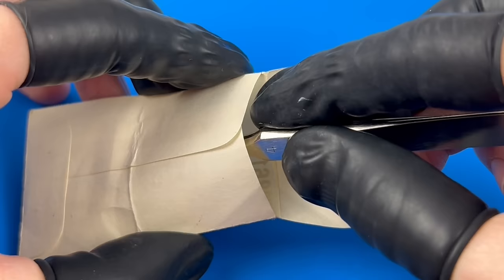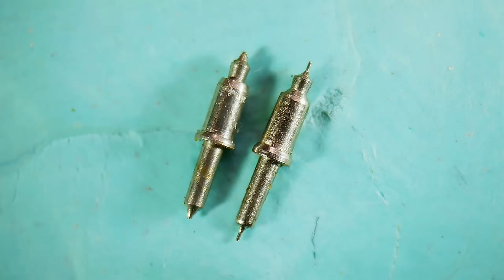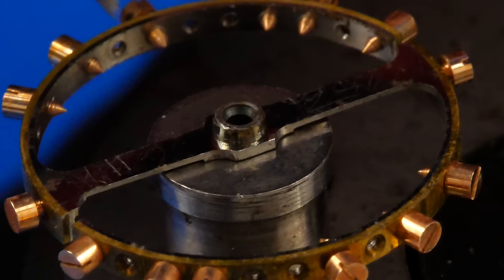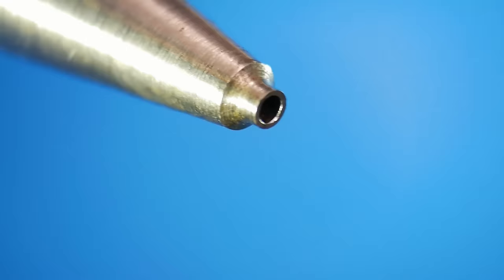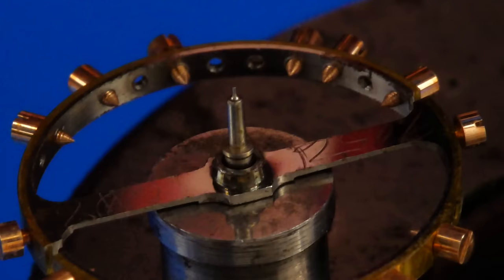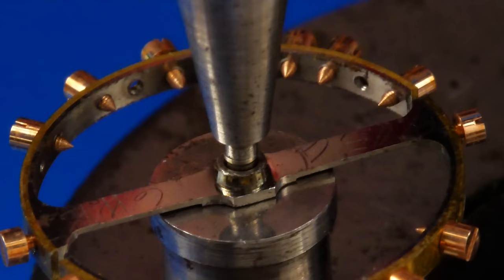The replacement staff arrived, and after verifying all the dimensions were correct, I can proceed with the installation. This time, I'm using a slightly different punch so that it could fit over the lower part of the staff. It's then gently tapped until flush with the bottom of the hub.